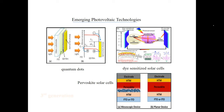The second generation is thin film, developed to reduce high fabrication costs and the need for resource materials — thickness can be reduced to several micrometers. The third type, called emerging photovoltaic technologies, is shown in this slide, and there is a lot of research here, for example quantum dot solar cells, dye-sensitized solar cells, and perovskite solar cells.